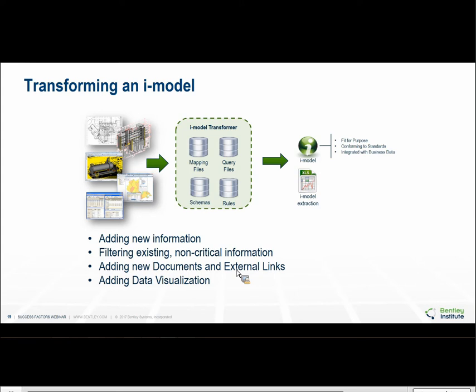Mapping information allows us to take an iModel and have it conform to a different schema or another standard. We can integrate information created by different applications to support decisions or relate data that's already in an iModel. We can also use this for inventory or reporting — to develop estimates, support purchasing, manage tagged items, or quantify bulk materials needed for construction or shutdown planning.